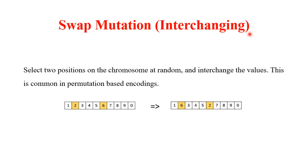In swap mutation, two positions are selected at random and their values are interchanged. This mutation technique is well suited for permutation-based encodings. For example, two positions with values 2 and 6 are selected and swapped to produce child 1, resulting in 6 at the first position and 2 at the second.